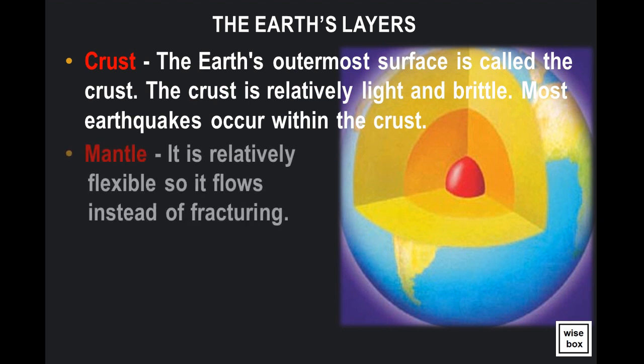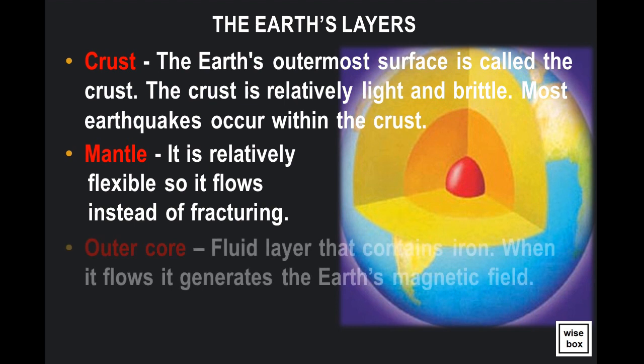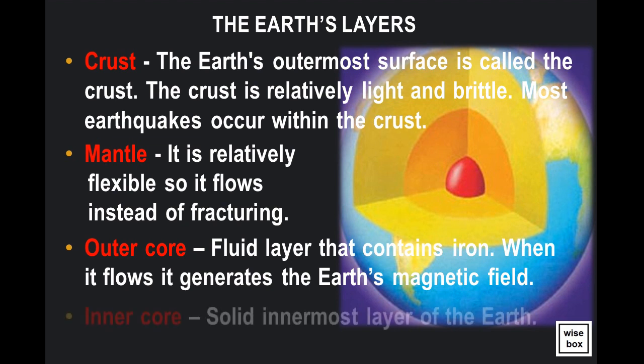The mantle is relatively flexible, so it flows instead of fracturing. The outer core is a fluid layer that contains iron. When it flows, it generates the Earth's magnetic field. The inner core is the solid innermost layer of the Earth.